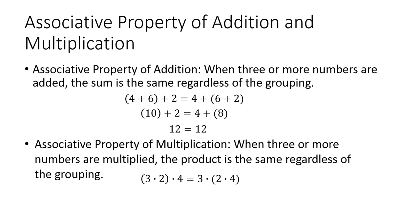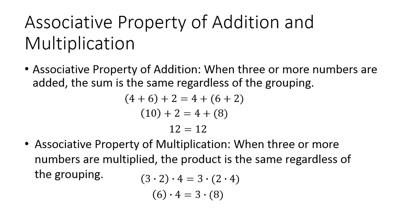For example, if we have parentheses around the three times two on the left-hand side, and then we put the parentheses around the two and the four on the right-hand side — notice the order is three, two, four on both sides; that doesn't change. The only thing we change is the grouping. Simplifying: three times two is six, times four; and two times four is eight, times three. Continuing to simplify, you get 24 equal to 24.